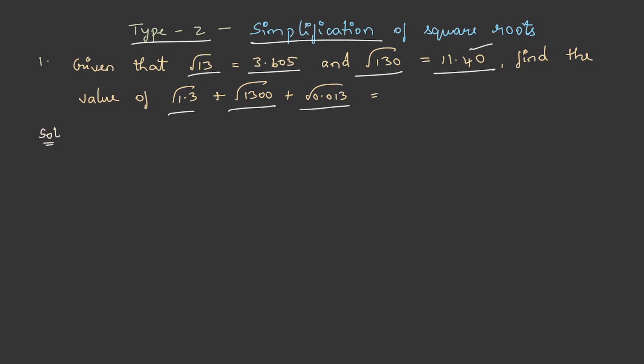Let us solve this. √13 is given as 3.605 and √130 is given as 11.40. Let us bring down this equation with these two terms.